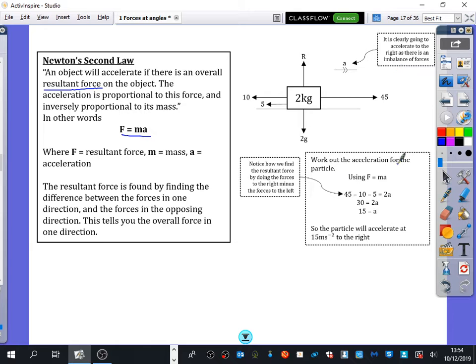So for this one, we're going to work out the acceleration of this particle. When we use F equals MA, we don't do F and work it out, and then do something separate. We do the whole thing in one place. We just say F equals MA. So we say the resultant force is 45 minus 10 minus 5. You do it from one direction minus the opposite direction, equals the mass, which is 2, times the acceleration. You write it in one single line. Work that out, and we get that A is 15. So it's going to accelerate at 15 metres per second squared to the right.